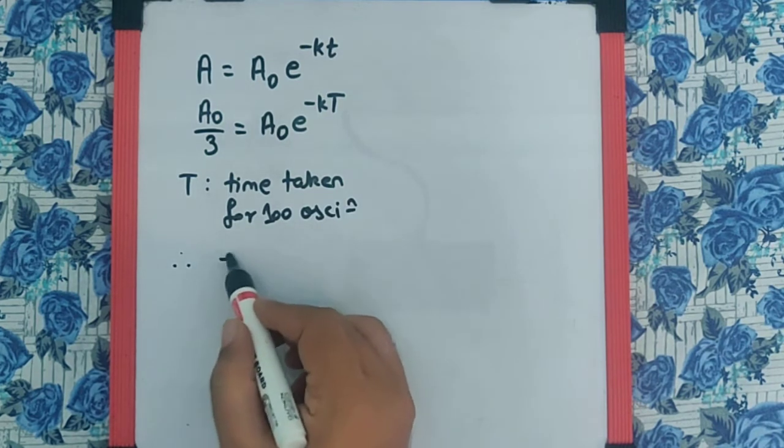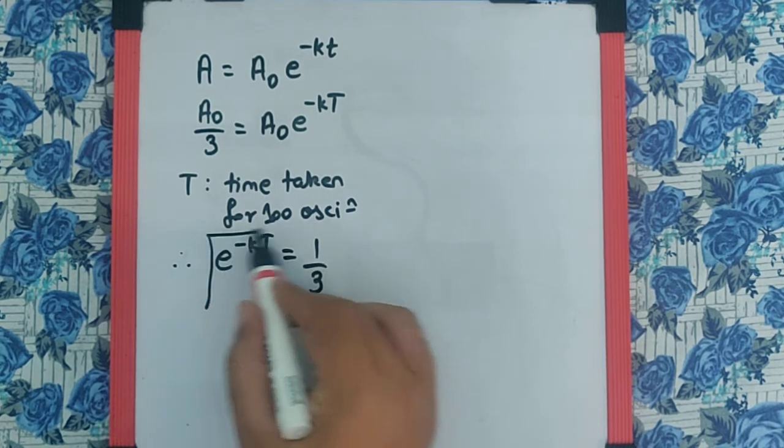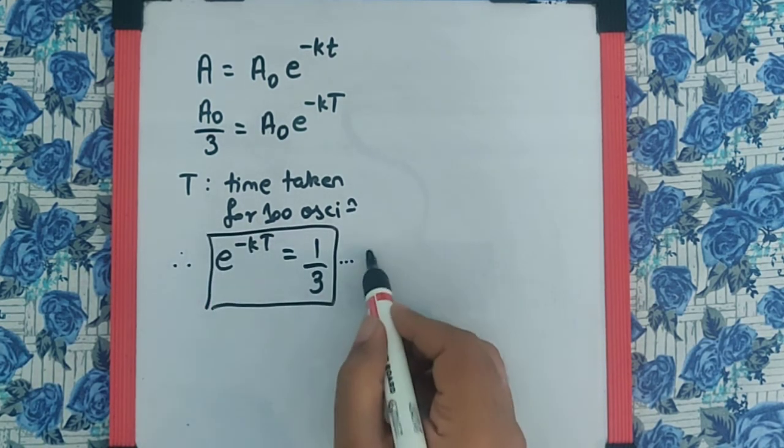Therefore, e raised to minus kT becomes 1 by 3. Let's consider this as equation number 1.